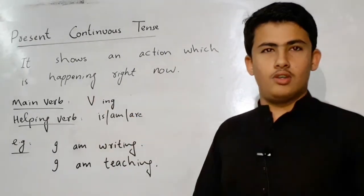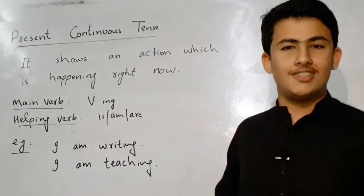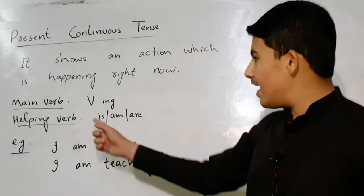The main verb of Present Continuous Tense is word plus ing, and the helping verb is am, are, or is.